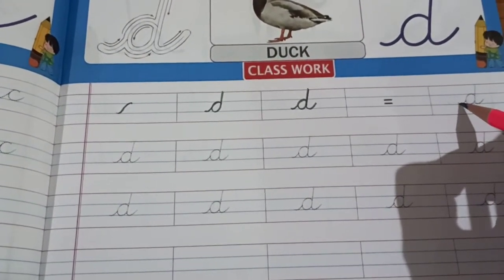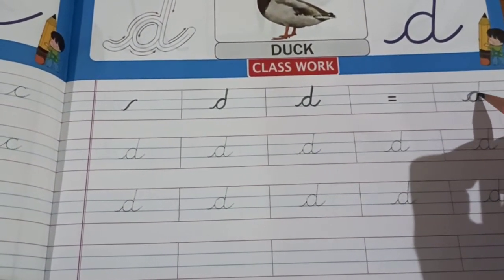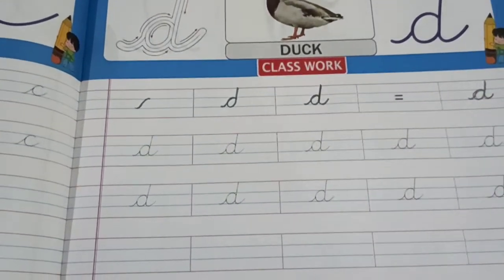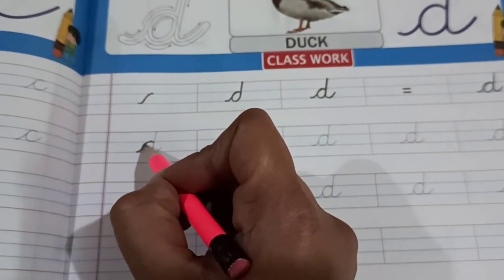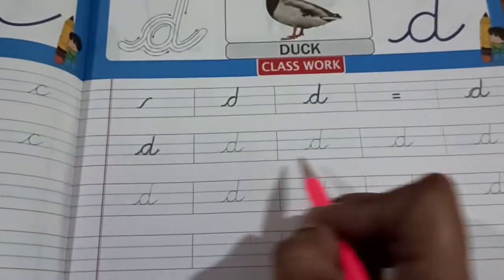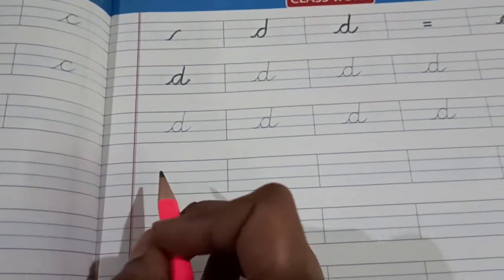Now we can find the letter D. First you have to trace these dotted lines, then you can write here.